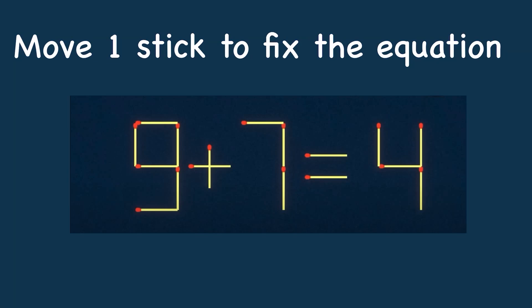You have to move one stick to fix the equation. Can you do it? Pause the video and let me know your answer in the comment section. 9 plus 7 equals 4. This is not correct. Which stick should we move to make it correct? The possibilities are that we can move this stick from here.